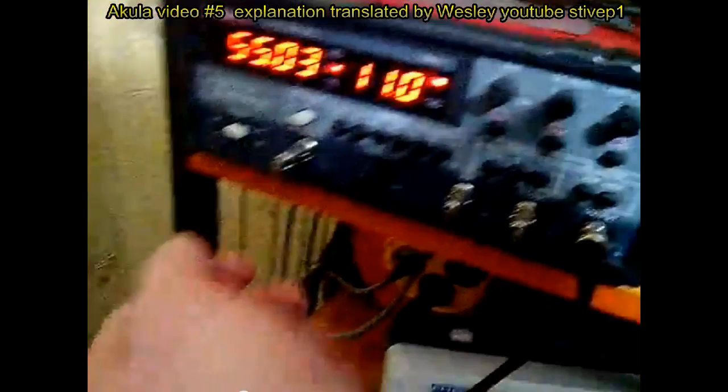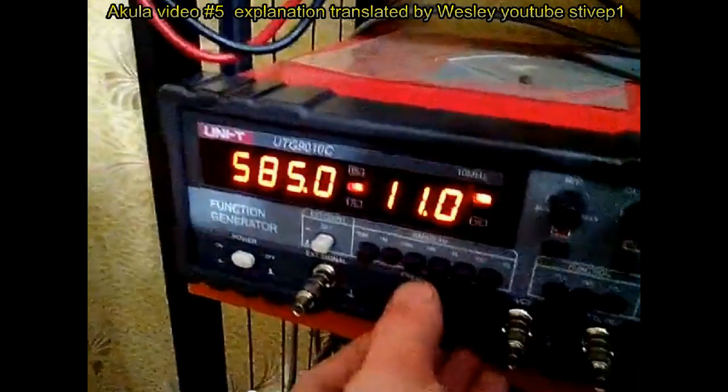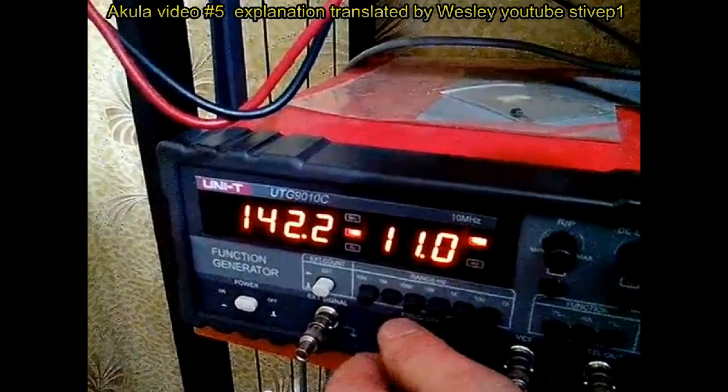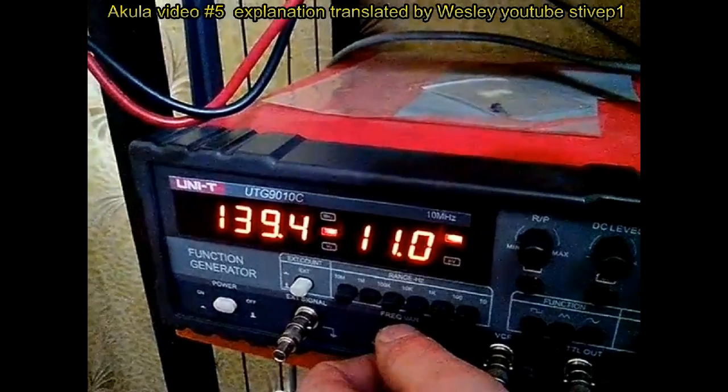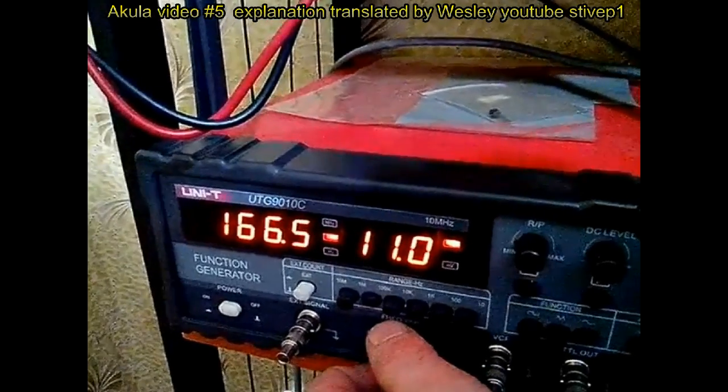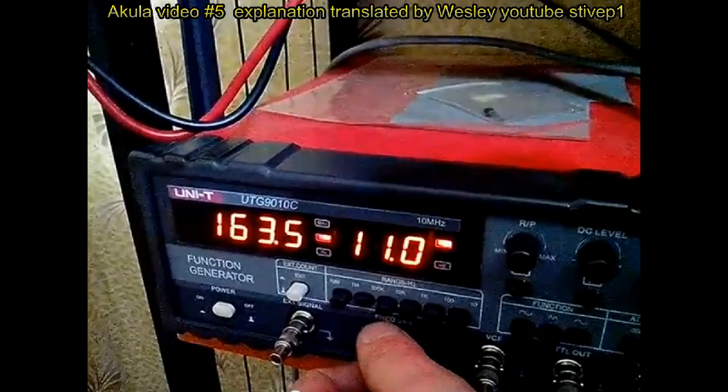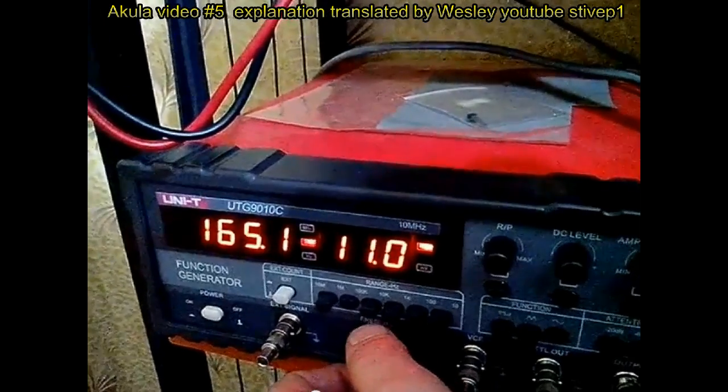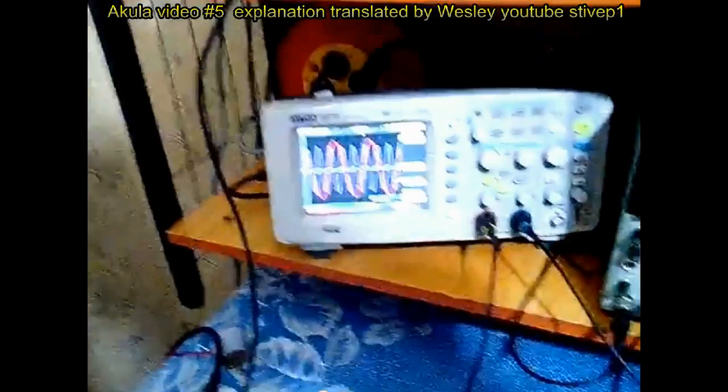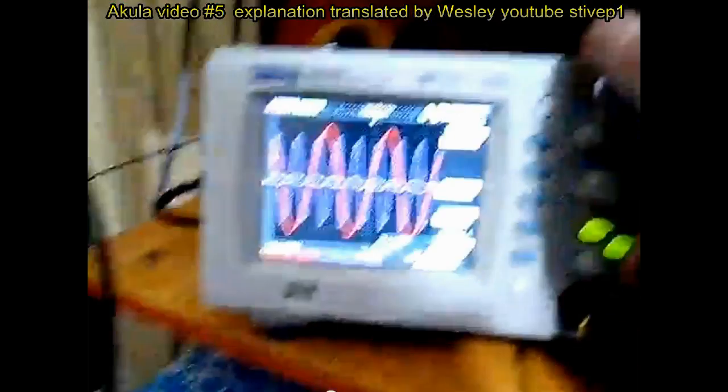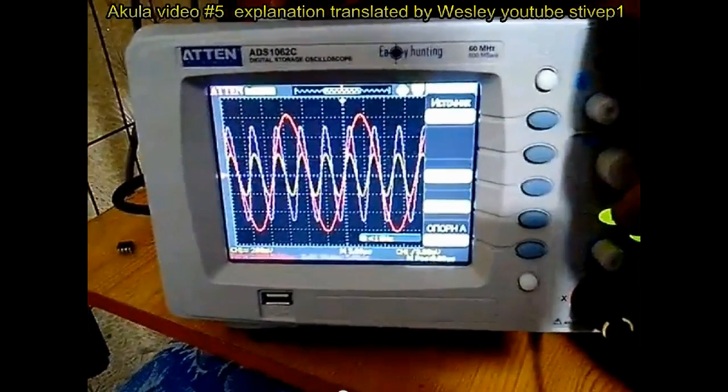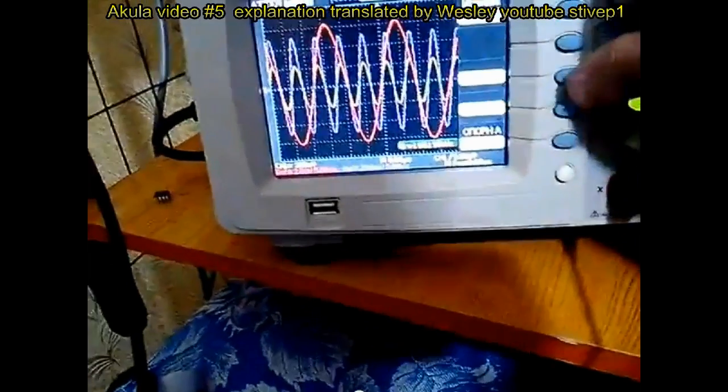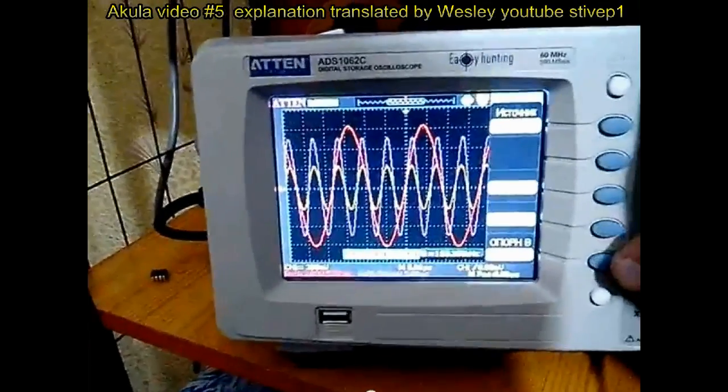We change the generator to sinus and we're going to tune exactly to the frequency 165.5 kHz. The frequency is 190 kHz, almost there. Then we go to the oscilloscope.